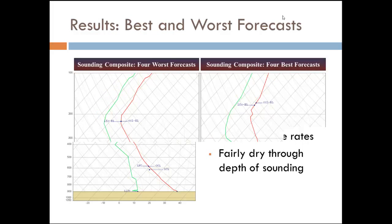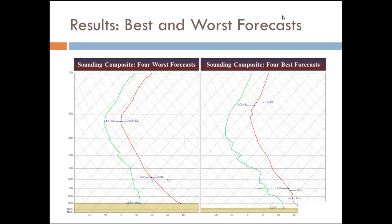Comparing those four worst forecasts on the left to the best forecasts on the right — the observed soundings for the four cases that were forecast the best by the RAP — we see some pretty significant differences. The four worst forecasts are pretty dry, pretty unstable. But for the ones forecast the best, you're a lot more moist in the boundary layer, not necessarily as unstable through the entire boundary layer. You do have dry adiabatic lapse rates near the surface but then it changes aloft, leading to an overall lower LCL — especially with that higher moisture near the surface — and a lower LFC.